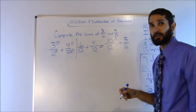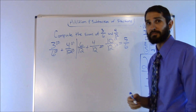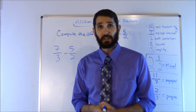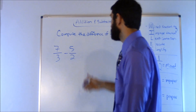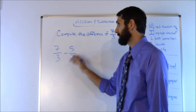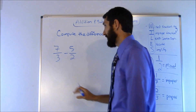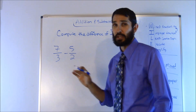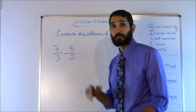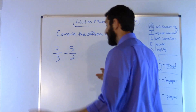S for simplify: can 10 over 12 be reduced? Yes — the common factor is 2. So 10 divided by 2 is 5, and 12 divided by 2 is 6, giving us 5 over 6. Can we simplify further? No — the only common factor is 1, so 5 over 6 is our final answer. Now let's look at a subtraction problem: compute the difference of 7 over 3 minus 5 over 2.